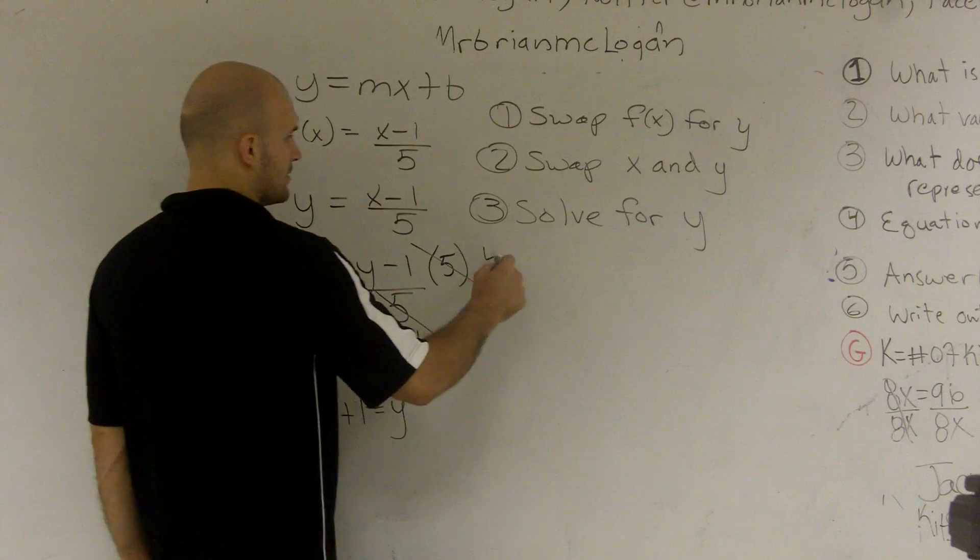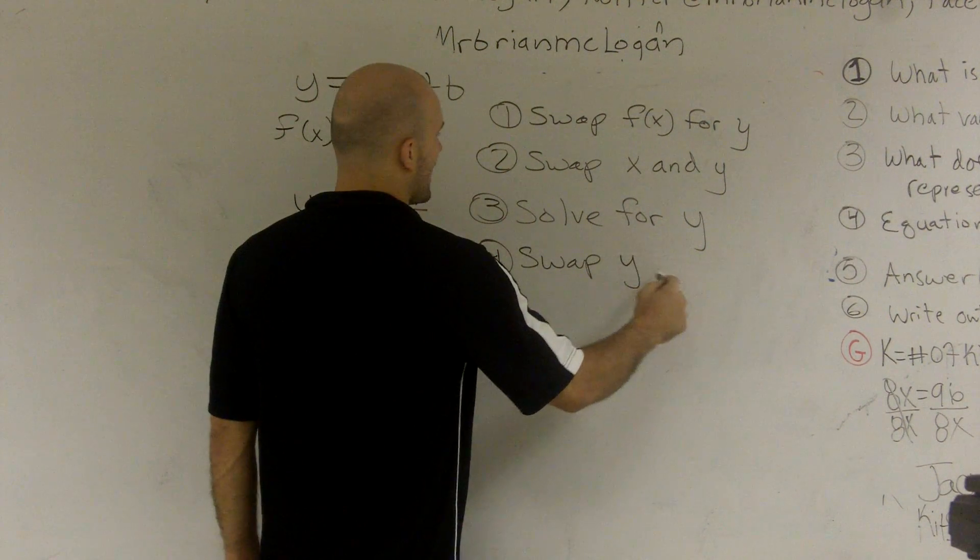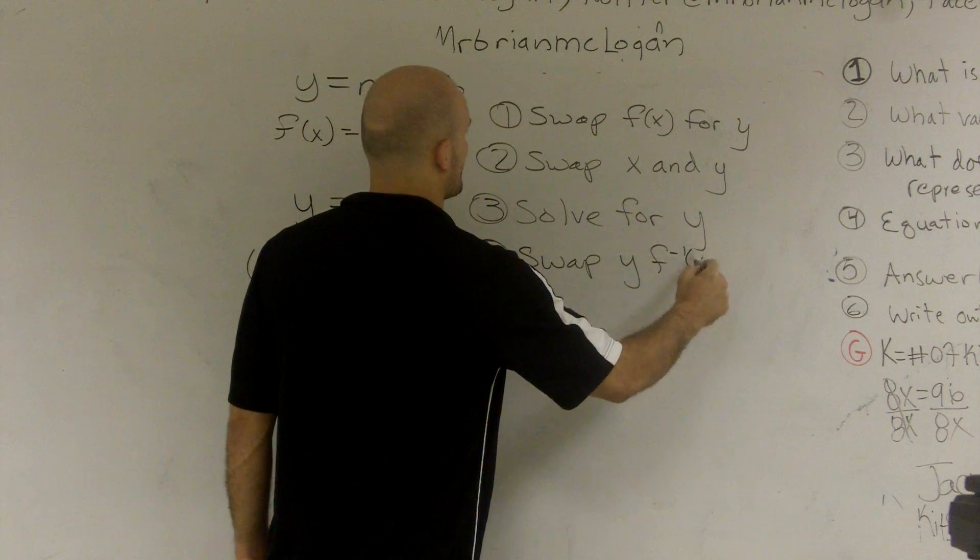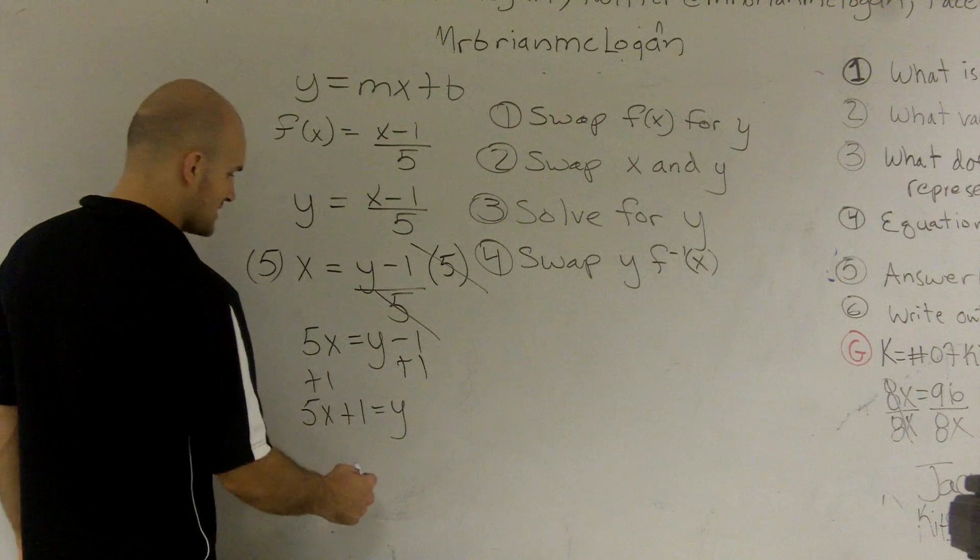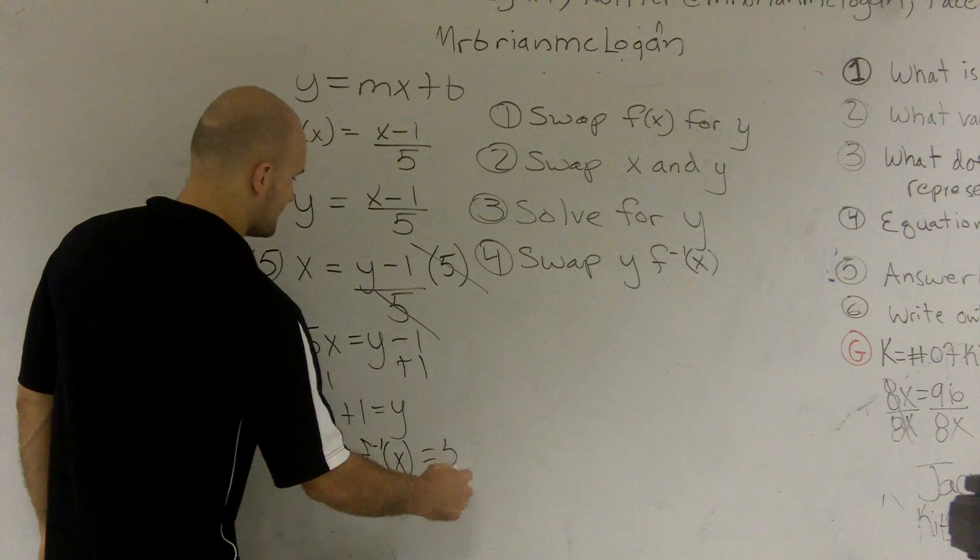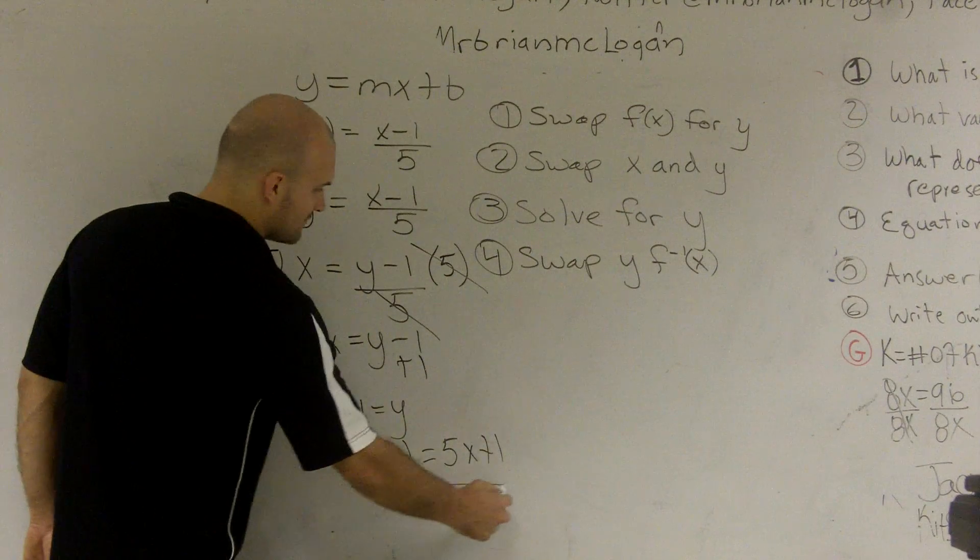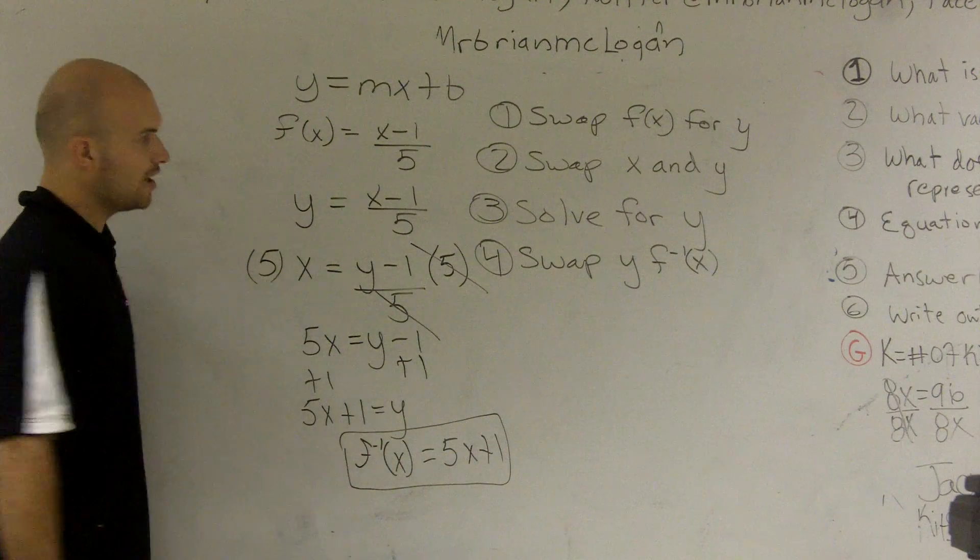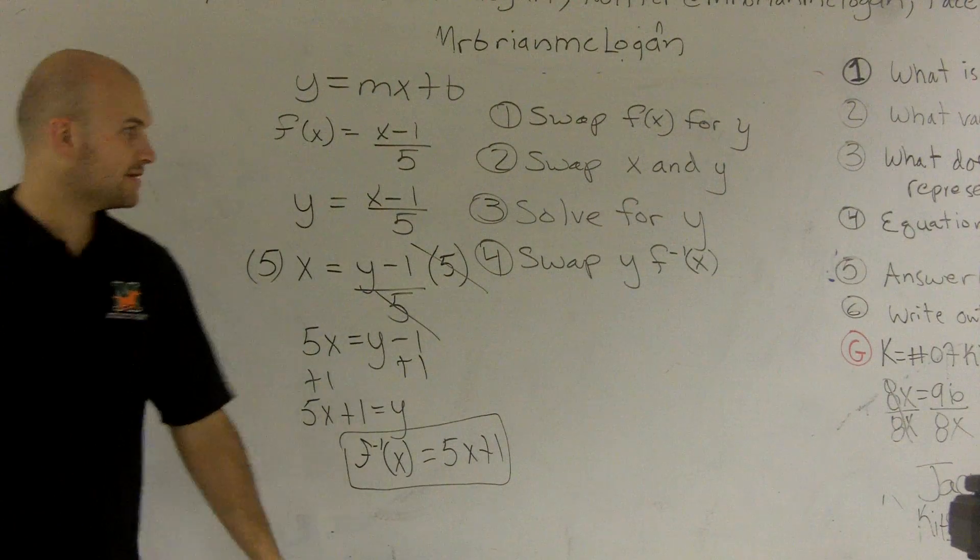So now the fourth step is now to swap my y for f inverse of x. Because now what I've just completed is finding the inverse. So now I say f inverse of x is equal to 5x plus 1. And now I have just completed finding the inverse of a function. So you can follow these four easy steps. You can find the inverse for anything that you want.